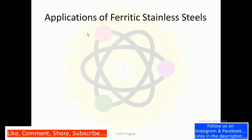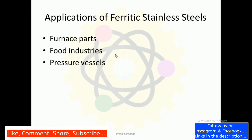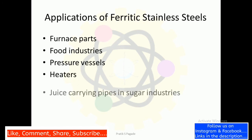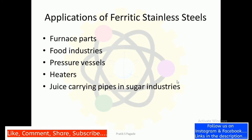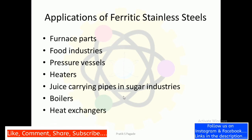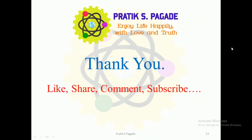It is possible to improve oxidation resistance even more by including silicon and/or aluminum when manufacturing ferritic steel. Applications of ferritic stainless steels include: furnace parts, food industries, pressure vessels, heaters, juice-carrying pipes, sugar industries, boilers, and heat exchangers. In this video we have studied about ferritic stainless steel. Thank you friends for watching this video — like, share, and comment, and subscribe to my channel.